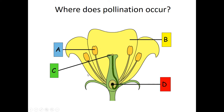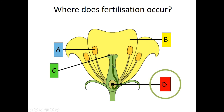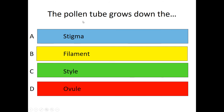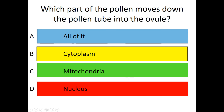So where does pollination occur? You should all be aware that it's C — the pollen lands on the stigma. Fertilization occurs in the ovary, which is D, and there's the tube and the nucleus going down the tube to fertilize the ovule or egg cell of the plant. The pollen tube grows down the style of the plant, and pollen enters the ovule via the micropyle.